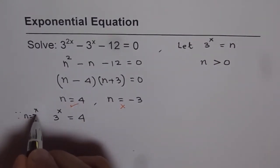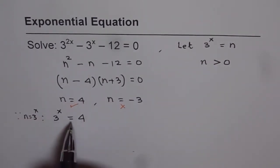Since n equals 3 to the power of x, we can write 3 to the power of x equals 4, and from here we can find what x is.